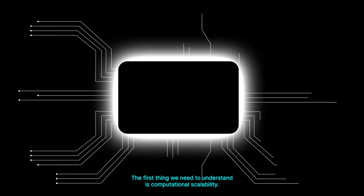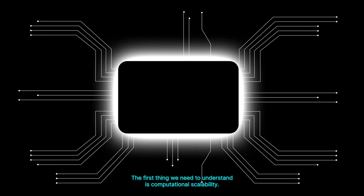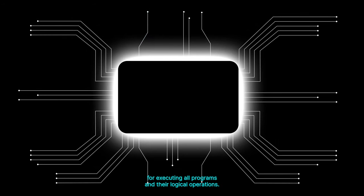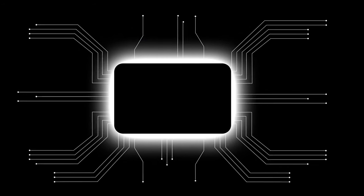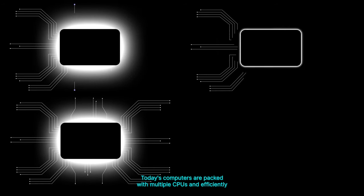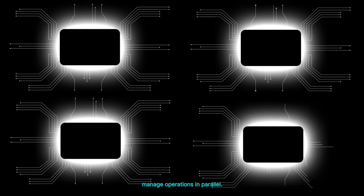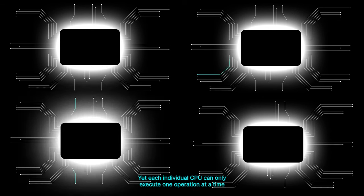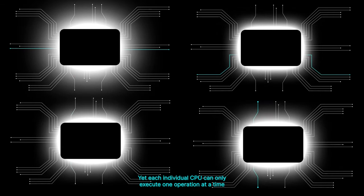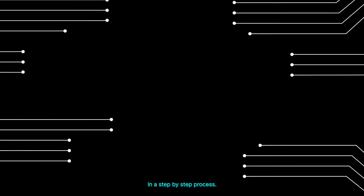The first thing we need to understand is computational scalability. In conventional computing, the CPU is responsible for executing all programs and their logical operations. Today's computers are packed with multiple CPUs and efficiently manage operations in parallel. Yet each individual CPU can only execute one operation at a time in a step-by-step process.